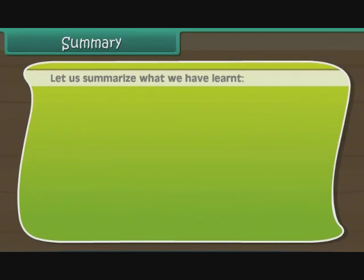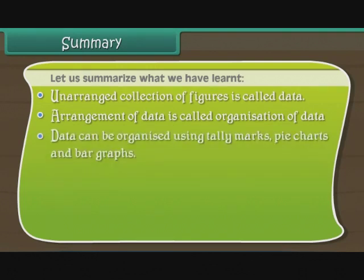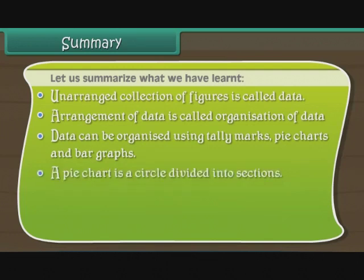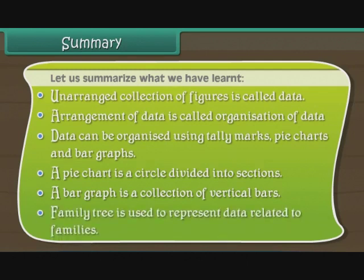Let us summarize what we have learned. Unarranged collection of figures is called data. Arrangement of data is called organization of data. Data can be organized using tally marks, pie charts, and bar graphs. A pie chart is a circle divided into sections. A bar graph is a collection of vertical bars. A family tree is used to represent data related to families.